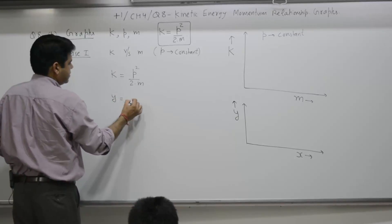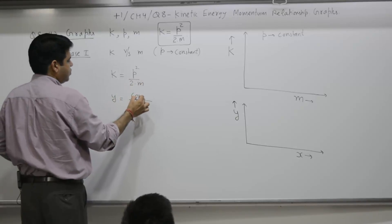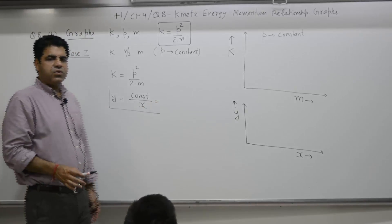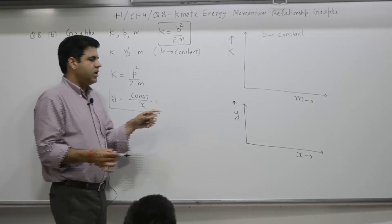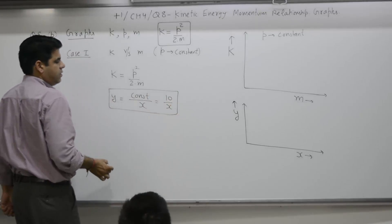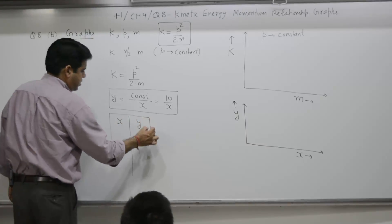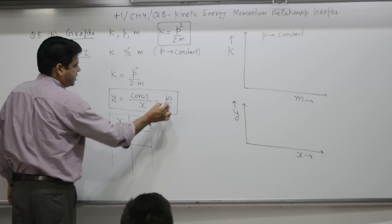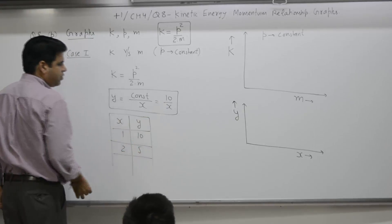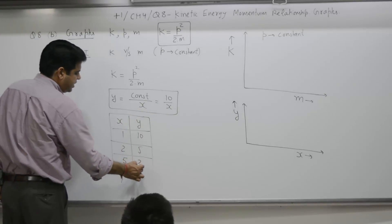So we have to plot a graph of the form y = constant/x. Take any value for the constant — let's say it is 10. Then make a table: when x is 1, y is 10; when x is 2, y is 5; when x is 5, y is 2.